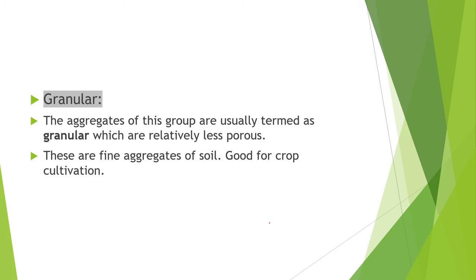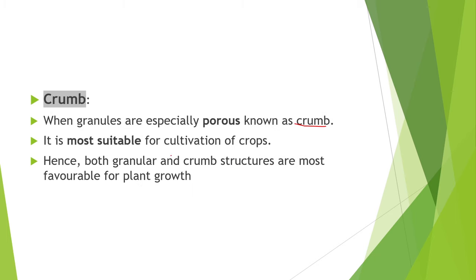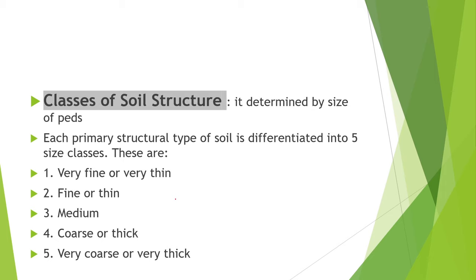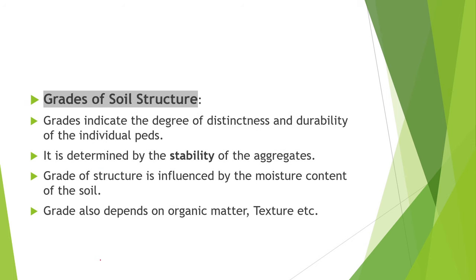Spheroidal structure is specific to surface soil, particularly high in organic matter or grassland soils. It is grouped into granular — relatively less porous, fine aggregates — and crumby, where granules are especially porous and more suitable for cultivation. Both granular and crumby structures are most favorable for plant growth. Classes of soil structure are determined by size of peds, differentiated into 5 size classes: very fine, fine, medium, coarse and very coarse.